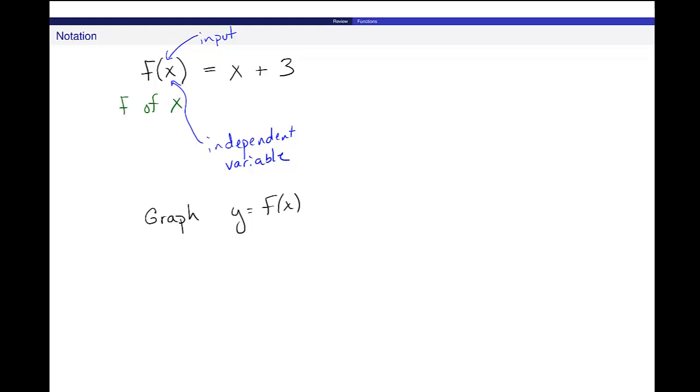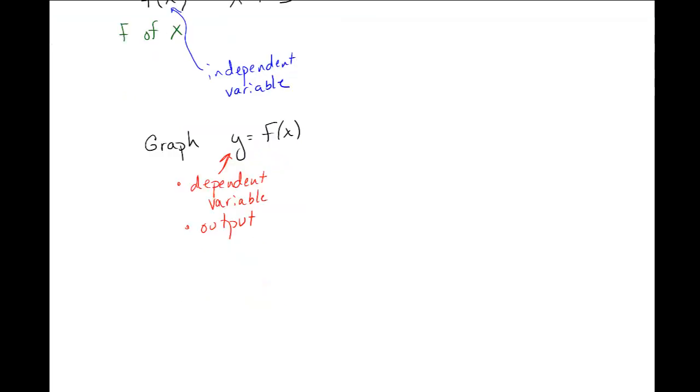So, this is often called the dependent variable. And it is most definitely the output of this function. So, let's do a couple of examples evaluating functions.